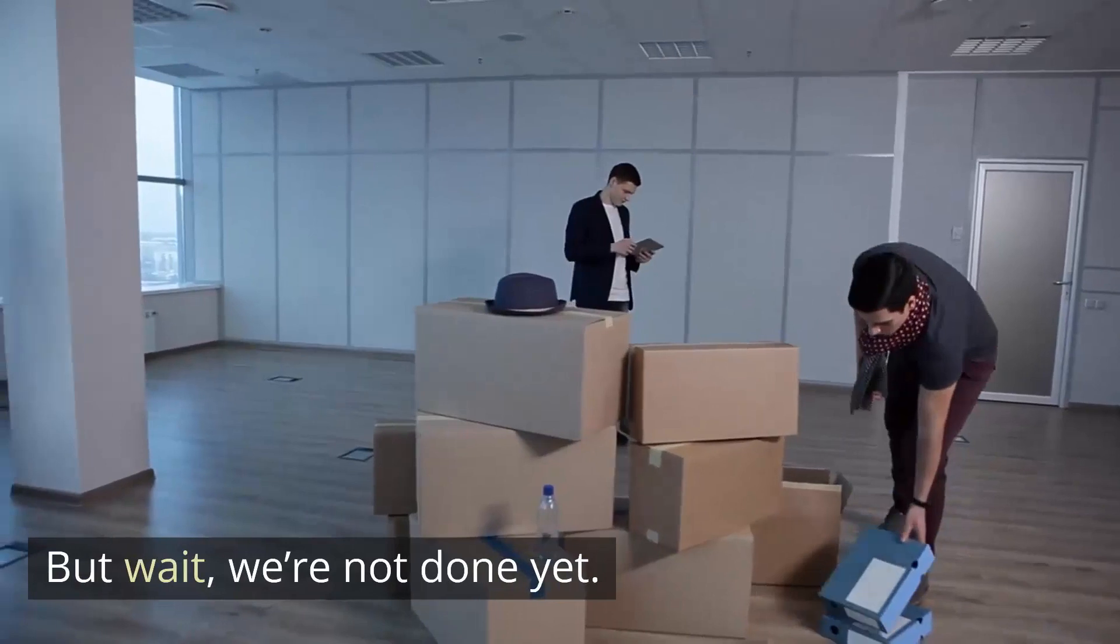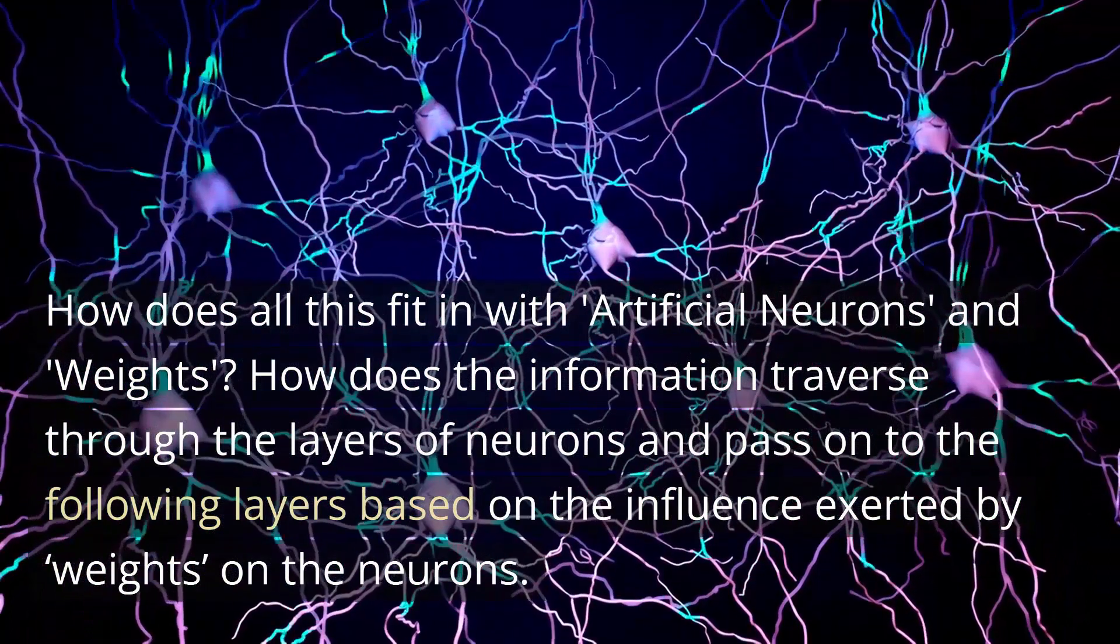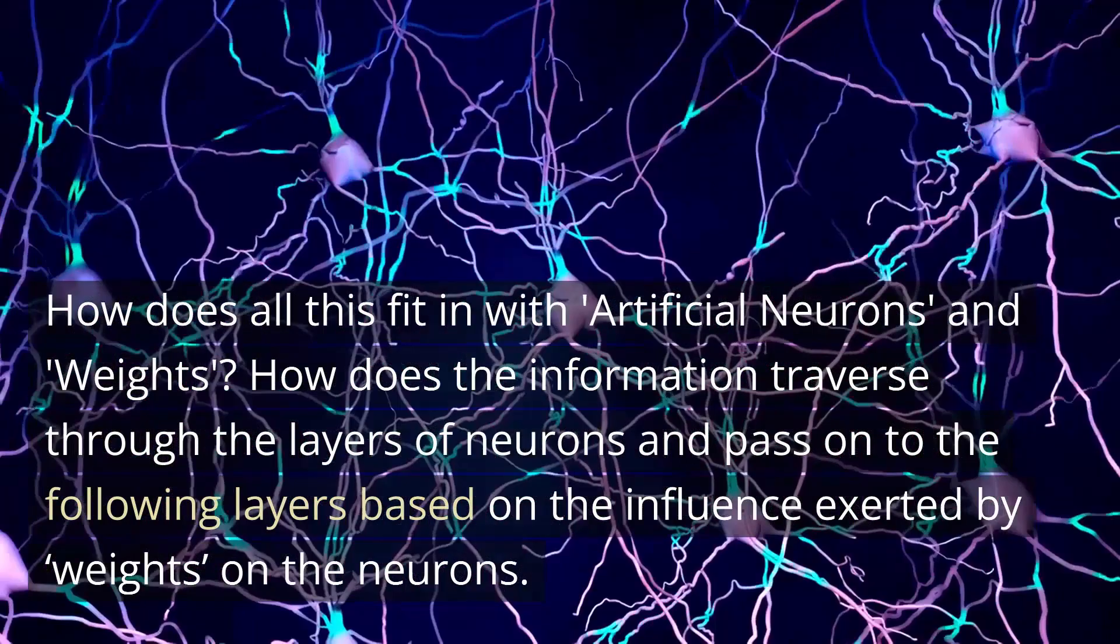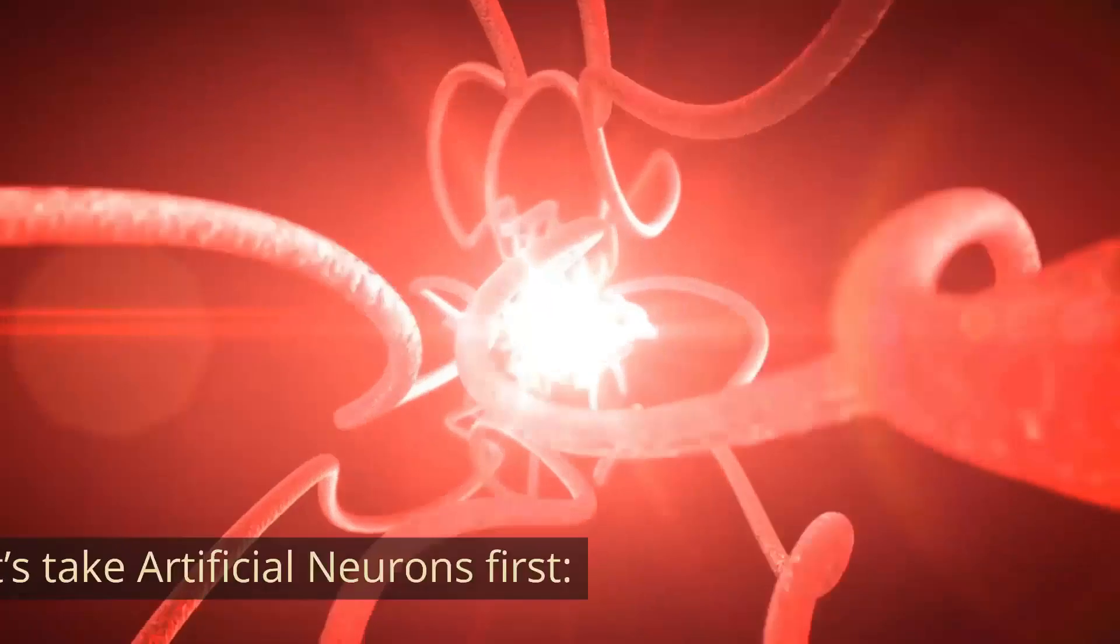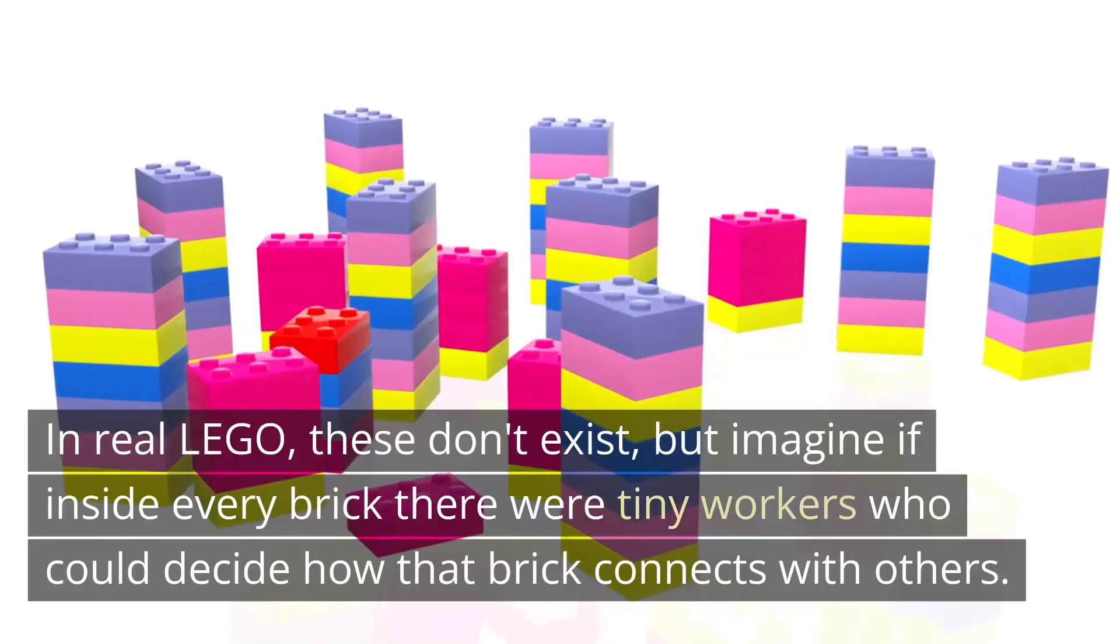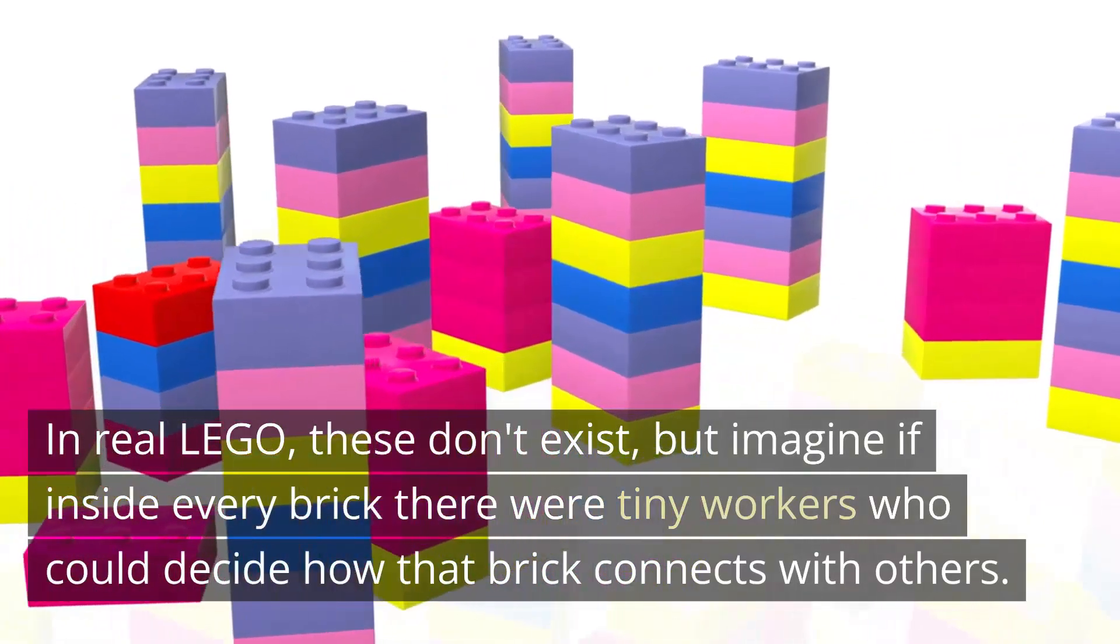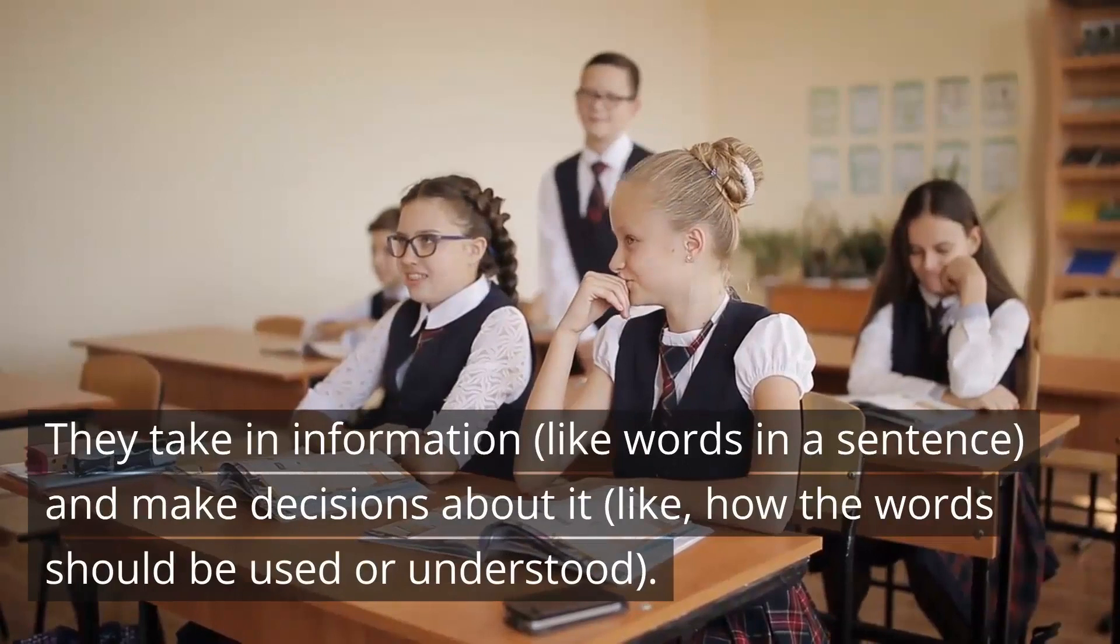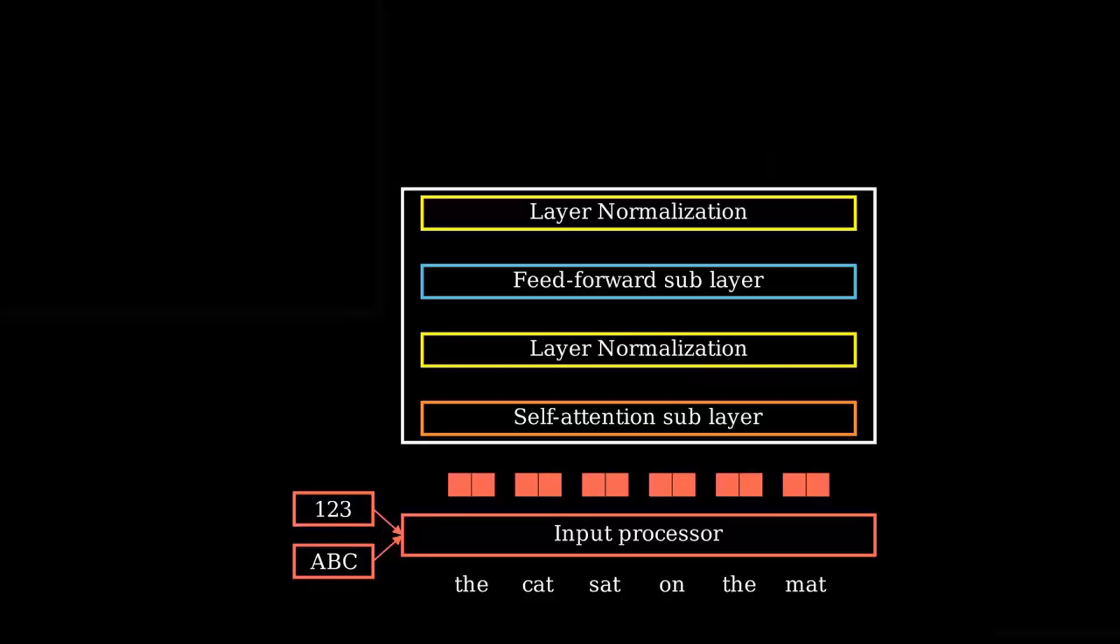But wait, we're not done yet. How does all this fit in with artificial neurons and weights? How does the information traverse through the layers of neurons and pass on to the following layers, based on the influence exerted by weights on the neurons? To explain this mechanism of artificial neurons and influence of weights on them, let's stick to our LEGO analogy. Let's take artificial neurons first. Think of artificial neurons as the tiny workers inside each LEGO brick. In real LEGO, these don't exist. But imagine if inside every brick there were tiny workers who could decide how that brick connects with others. In the transformer model, artificial neurons are like these workers. They take in information, like words in a sentence, and make decisions about it, like how the word should be used or understood.